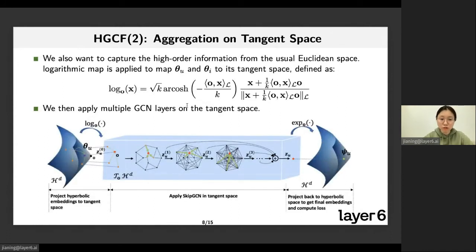Here is the overall process for a forward path of our model. We first initialize the user-item embeddings on hyperbolic space, then apply multiple GCN layers on the tangent space to aggregate information from high-order neighbors with skip connections to alleviate the over-smoothing problem on the graph. And all these GCN layers happen on the tangent space after we mapped the parameters from the hyperbolic space to the tangent space. We then project the output from the skip GCN back to the hyperbolic space to calculate the loss and optimize the parameters directly on hyperbolic space.